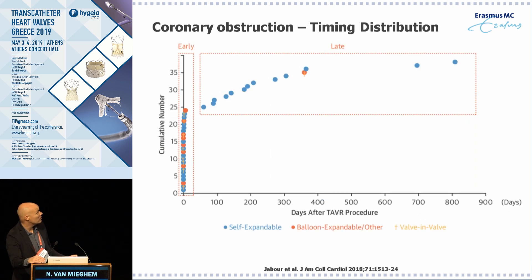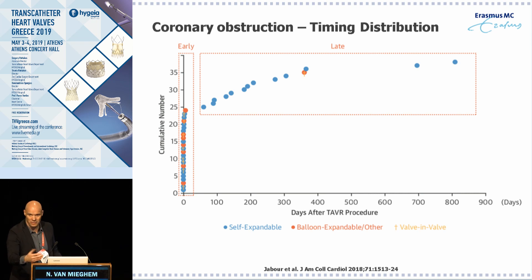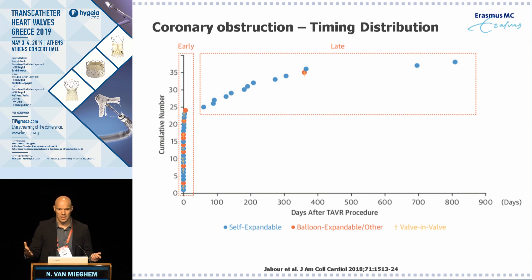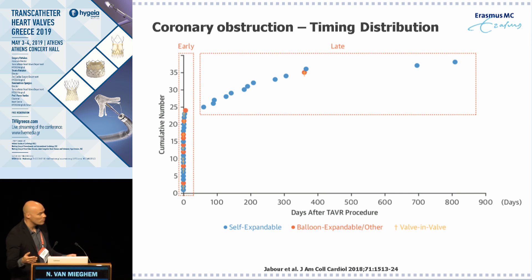This is retrospective analysis so we always have to take it with a grain of salt. The major takeaway is that valve-in-valve procedures are at highest risk for coronary obstruction relative to native valve implants. Whether there is a difference between self-expanding and balloon-expandable devices would require a randomized trial, but coronary obstruction is a rare event occurring in less than one percent of cases.